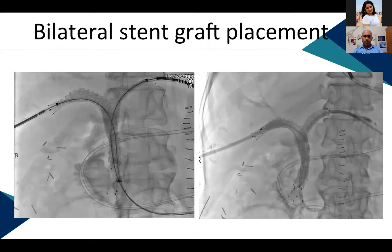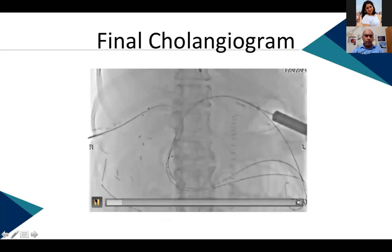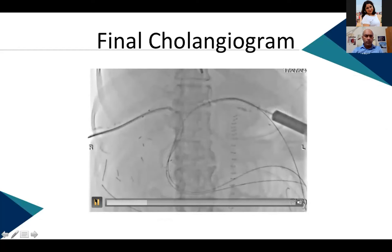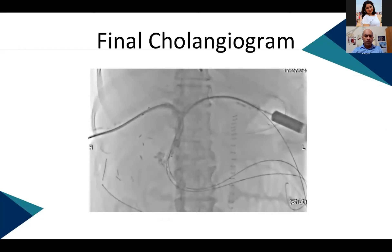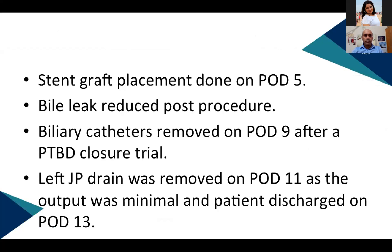With external drainage, the bile output did not reduce with biliary diversion. A decision was made to place bilateral stent grafts as a bailout maneuver. Two biliary covered fluency stent grafts were placed bilaterally. The final cholangiogram, performed from both sheaths simultaneously, showed no active extravasation, which had been present previously.